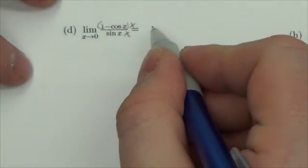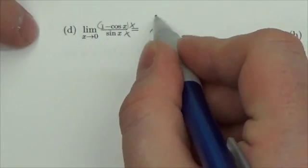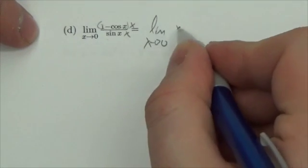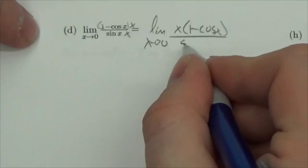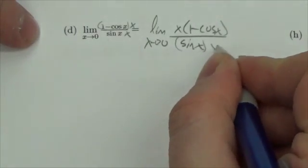So I'm going to take the limit. This becomes the limit as x approaches 0 of x times (1 - cos x) all over sin x times x.